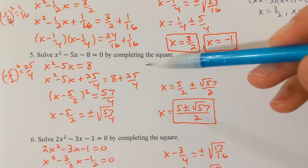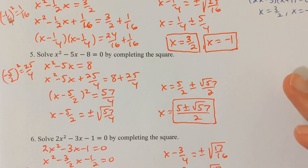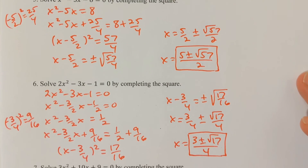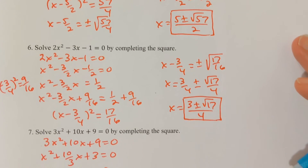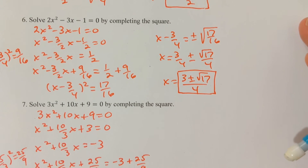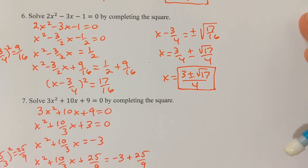Think of the completing the square method as your next best option if you've ruled out factoring. At least at this point, it's your next best option.